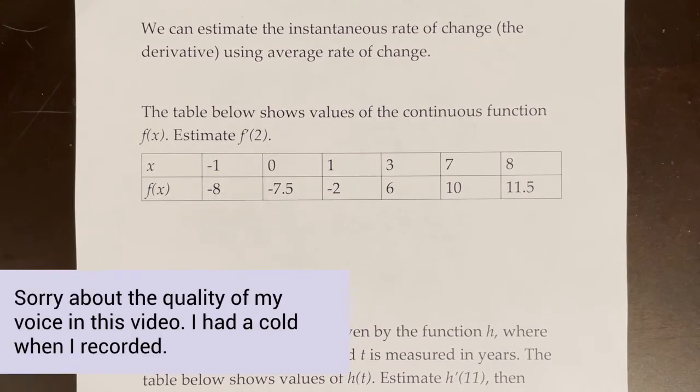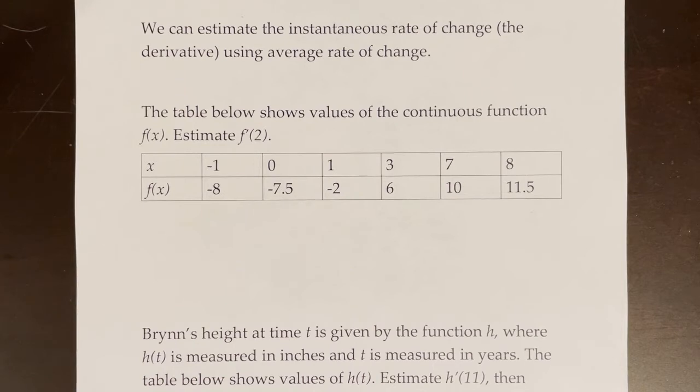We can estimate the instantaneous rate of change, also known as the derivative or the slope of the tangent line, using the average rate of change, which is the slope of the secant line. If you're not sure what those terms mean, I'd encourage you to watch my 2.1 video before watching this video.